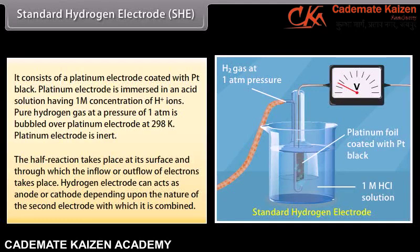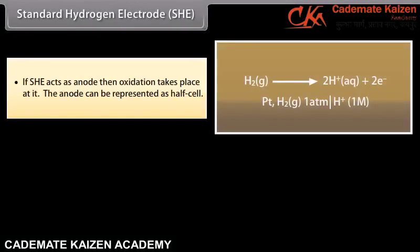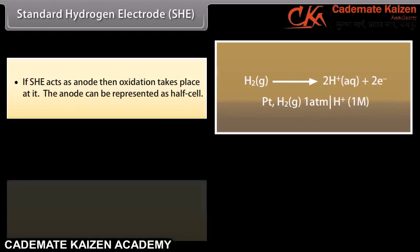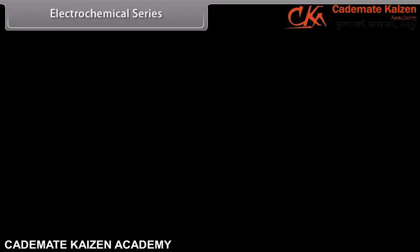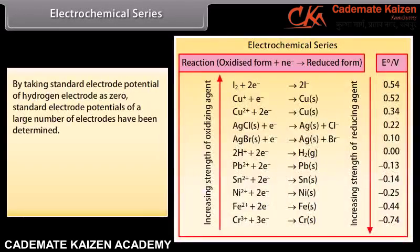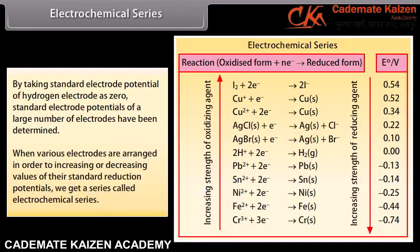EMF of the cell: Any galvanic cell is a combination of two half cells, and the electrodes in these half cells have different electrode potentials. The difference in electrode potentials of the two electrodes of the cell is termed as electromotive force of the cell. To calculate EMF: obtain reduction potential for the anode and reduction potential of the cathode, then combine them. EMF of the cell = E_cathode − E_anode, that is, E_cell = E_right − E_left.